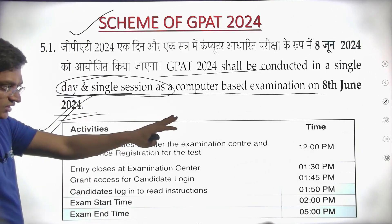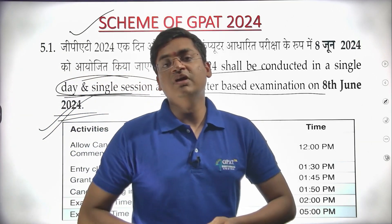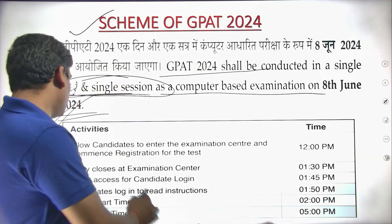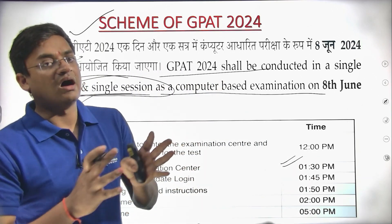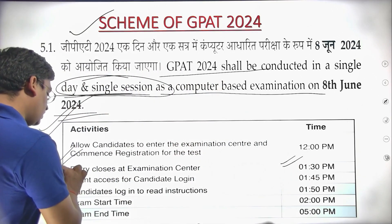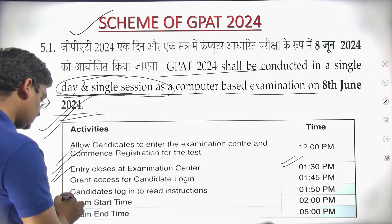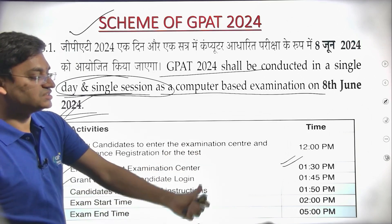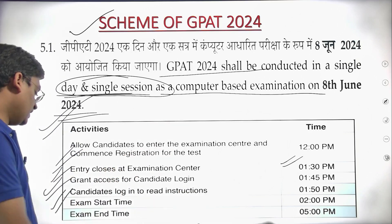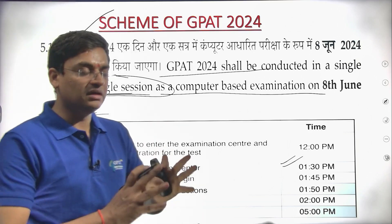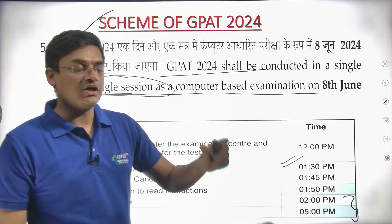Regarding the exam schedule: at 12 o'clock in the afternoon you will be allowed to enter the examination center. Entry closes at 1:30, meaning you will have one and a half hours for entry. Grant access for candidate login will be at 1:45. Candidate login to read instructions is at 1:50, and the examination will start at 2 p.m. and end at 5 p.m. So the main examination timing will be 2 to 5 p.m., with entry from 12 p.m.